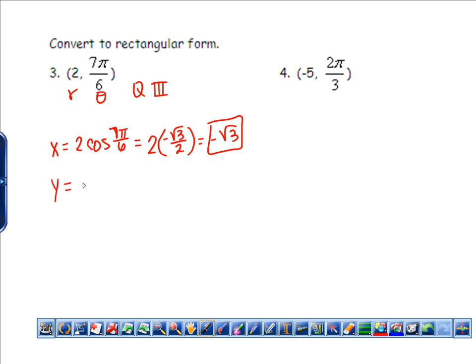And to find the y value, I would have 2 sine of 7π/6. This is going to give me 2. And then again in quadrant 3, I'm going to have a negative, and then that's going to be 1/2. So my y value is going to be -1. So my final answer would be (-√3, -1).